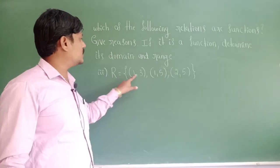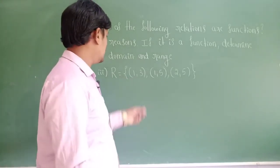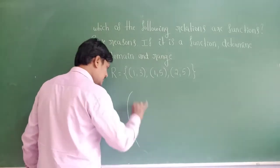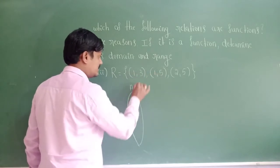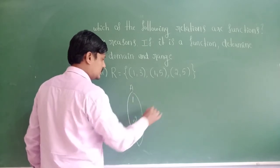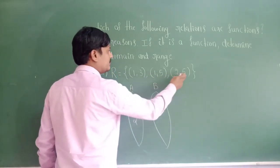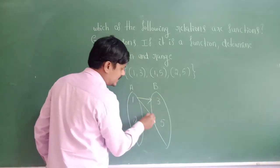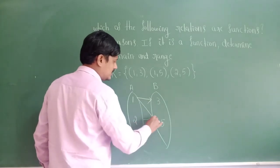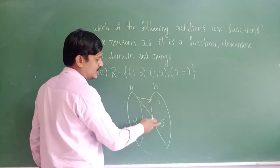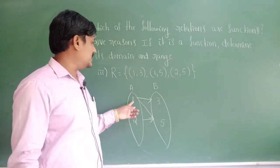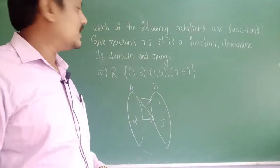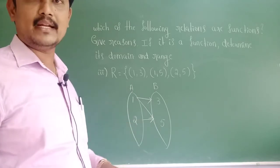Next problem: R = {(1,3), (1,5), (2,5)}. Here the first element 1 is repeated, therefore it is not a function from A to B. Consider first elements as set A values: 1 and 2. Set B values: 3 and 5. Here 1 is related to 3 and also 1 is related to 5, giving a double arrow mark. Therefore element 1 of set A is related to both 3 and 5, so it is not a function from A to B.